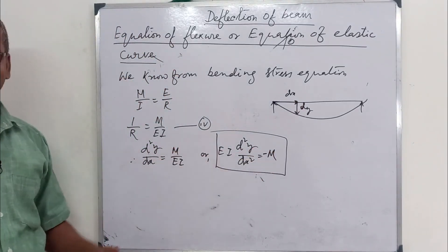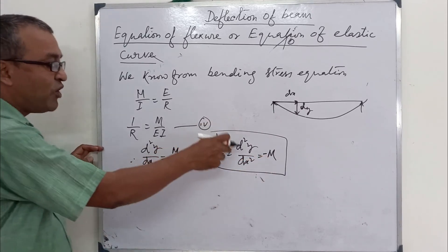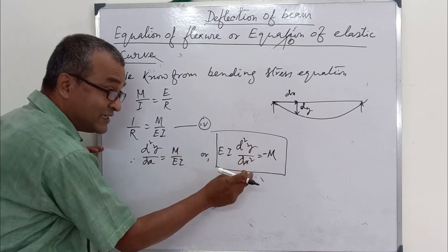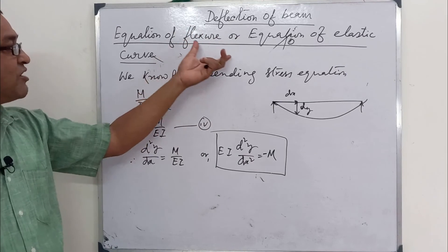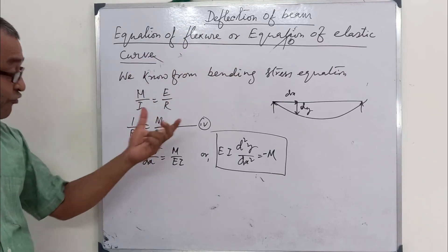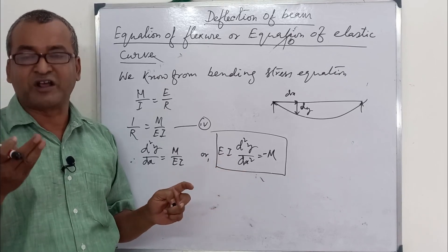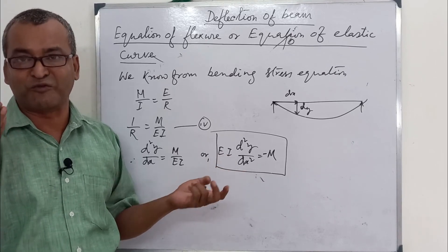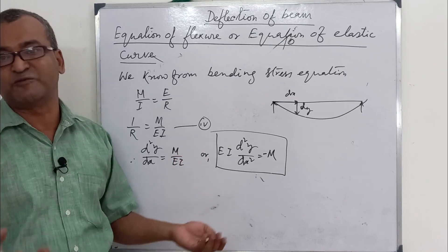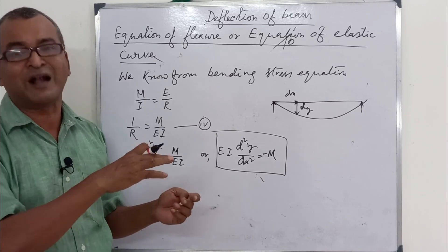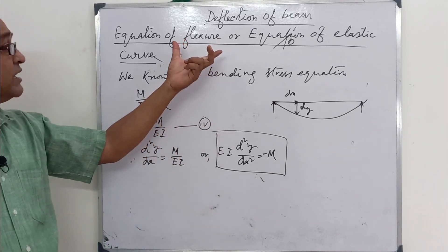This is the equation of flexure or equation of elastic curve. From this equation, we can deduce all deflection formulas for: cantilever beam with point load, cantilever beam with distributed load, simply supported beam with point load, simply supported beam with distributed load, or part loaded beams.